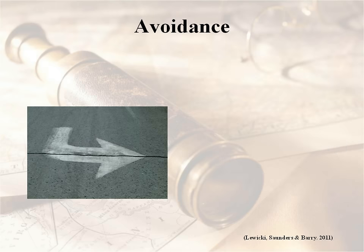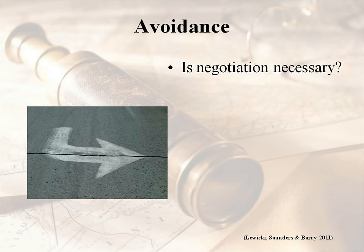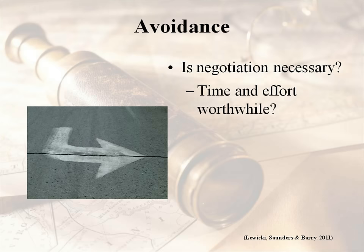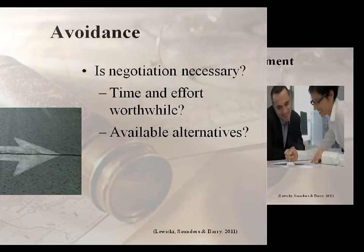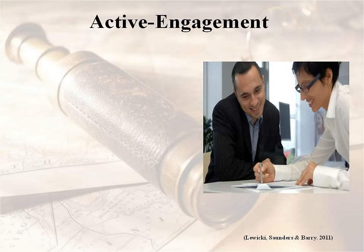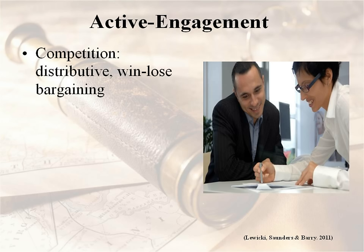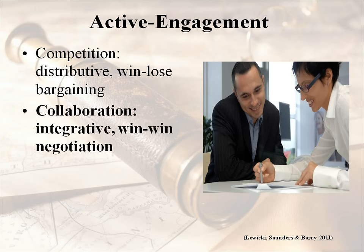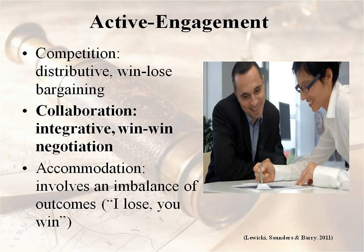Avoidance is a non-engagement strategy. If I'm able to meet my needs without negotiating at all, why should I negotiate if there's nothing in it for me — no possible gain, not worth the time and effort, and maybe there are available alternatives. Active engagement includes three different levels: competition, which is the distributive win-lose, zero-sum bargaining scenario; collaboration, which is integrative negotiation and win-win; and accommodation, which involves an imbalance of outcomes where I lose and you win — but sometimes that may be the choice you make because the relationship is more important than short-term financial or resource gain.